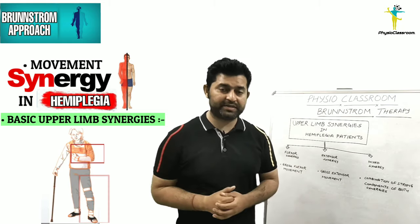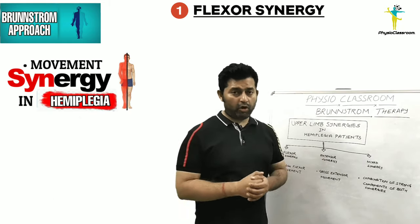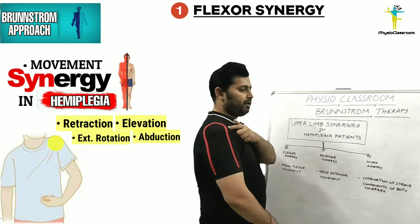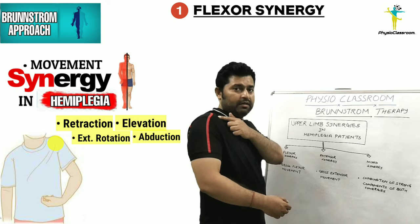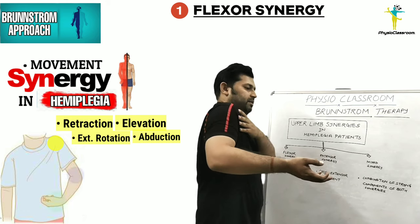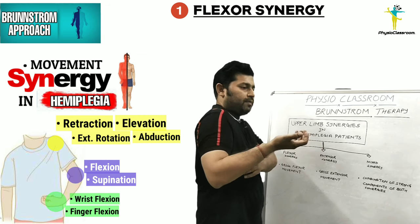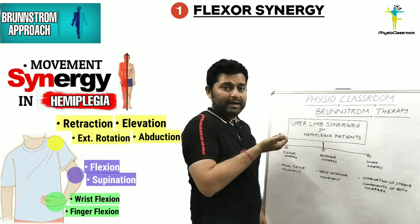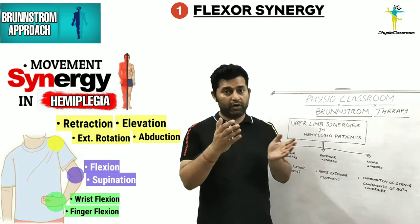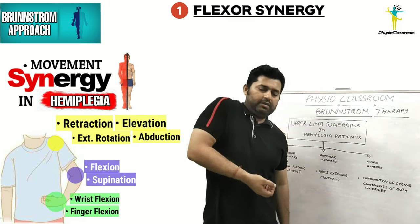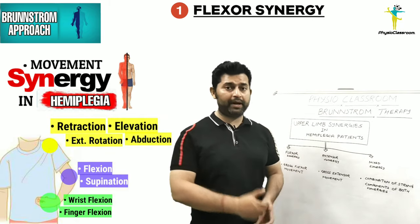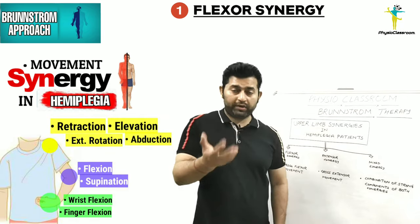The important components of the upper limb flexor synergy in hemiplegic patients are: shoulder retraction and elevation, along with shoulder external rotation and abduction, elbow flexion and forearm supination, and wrist and finger flexion. The flexor synergy would look something like this.